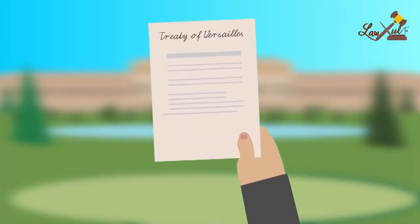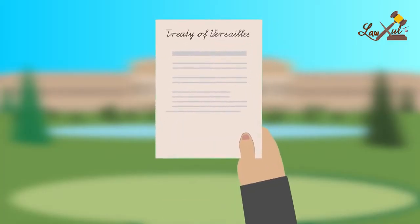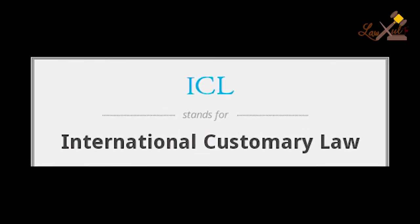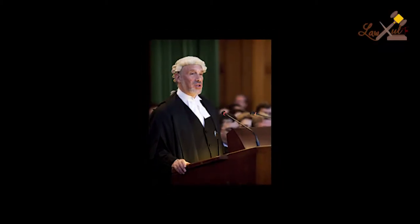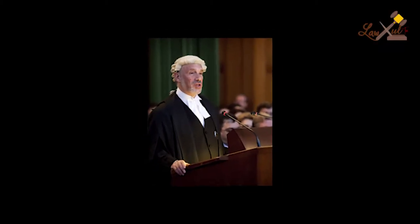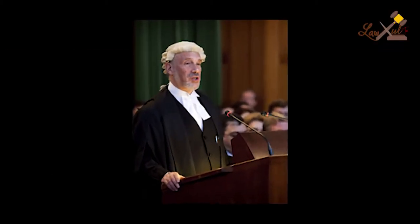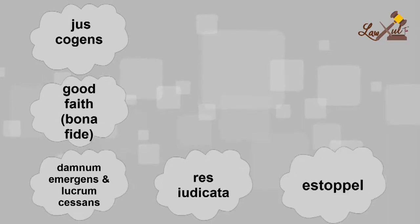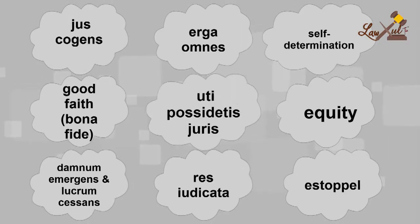Now there are different sources of international law. One is treaties. Secondly are customs. Thirdly are the writings from different jurists such as Malcolm Shaw and many others, and the decisions from different courts. But also the other general principles of law that are applied within states.